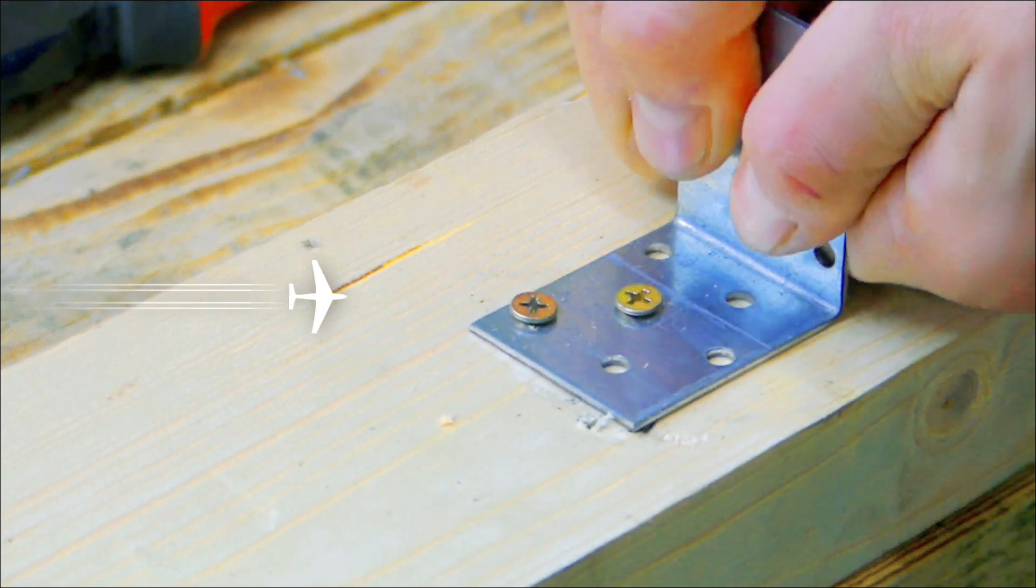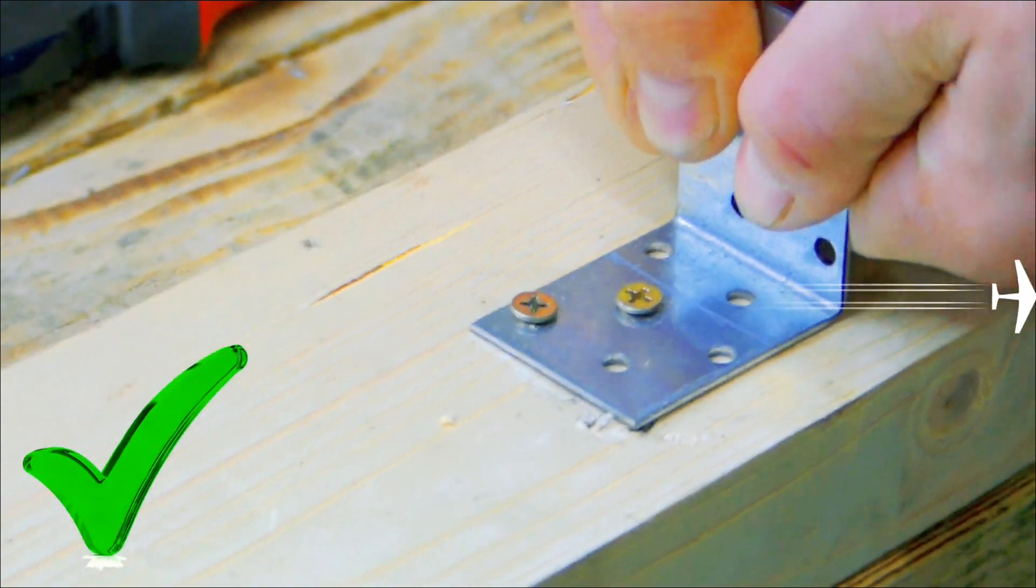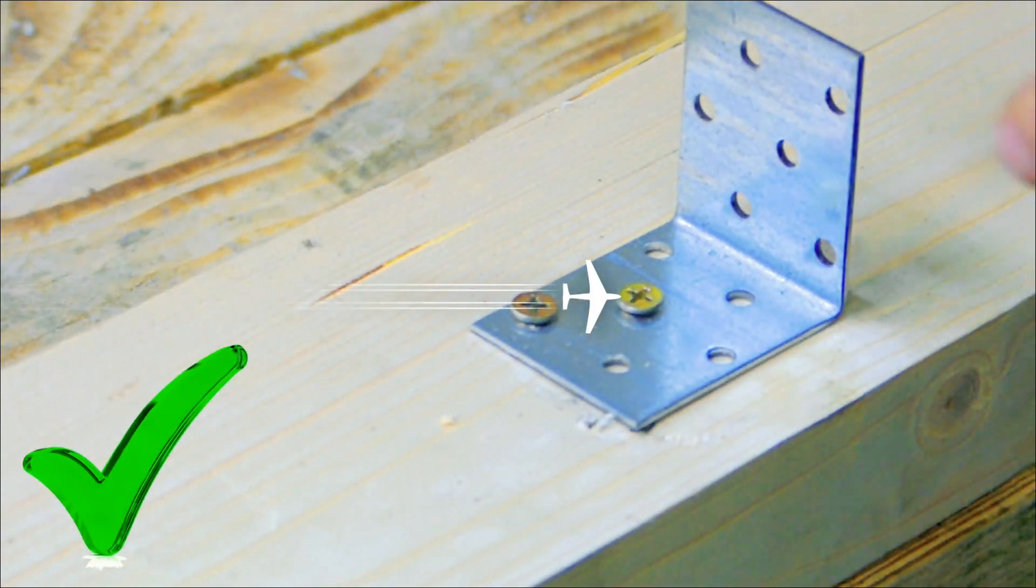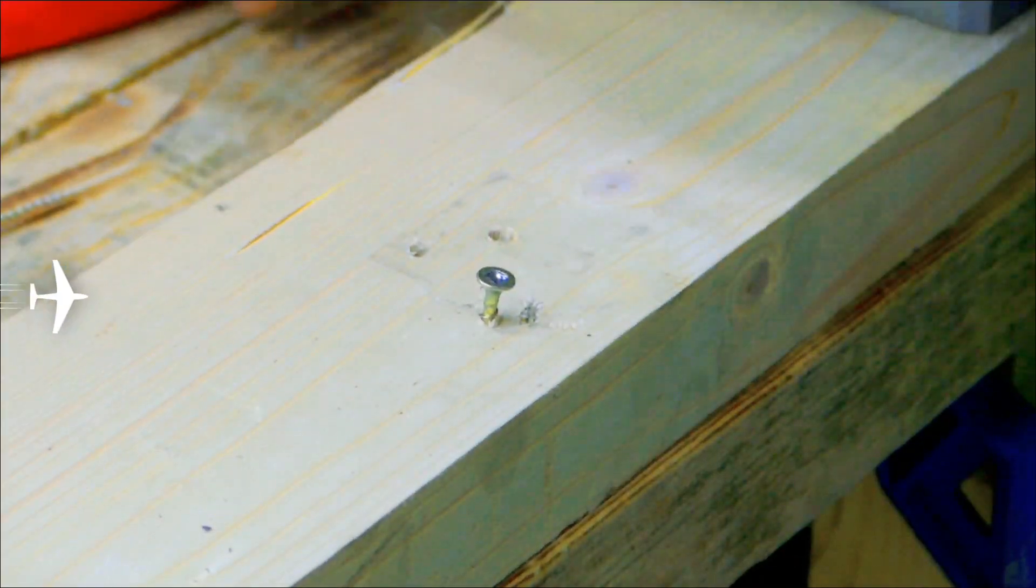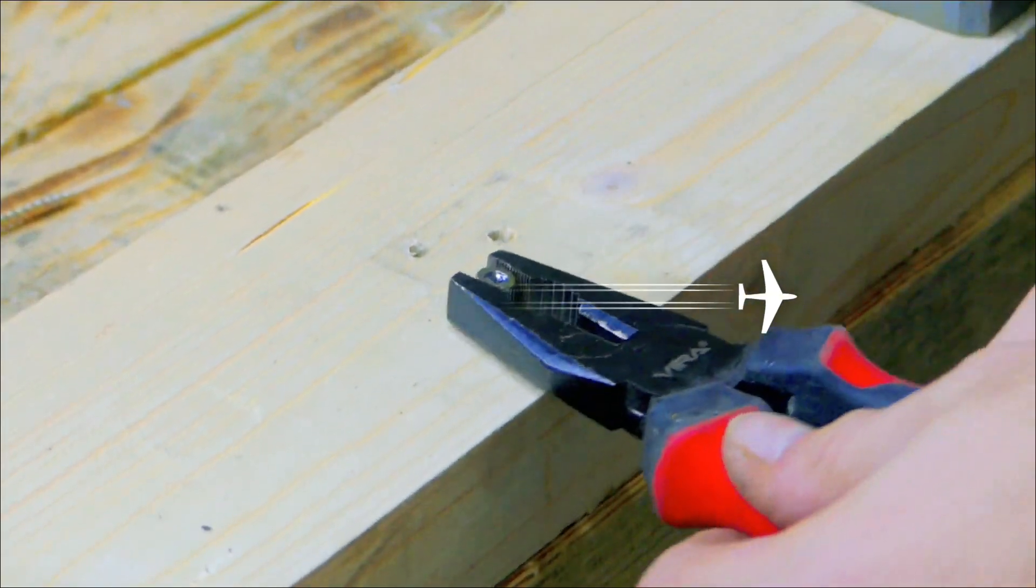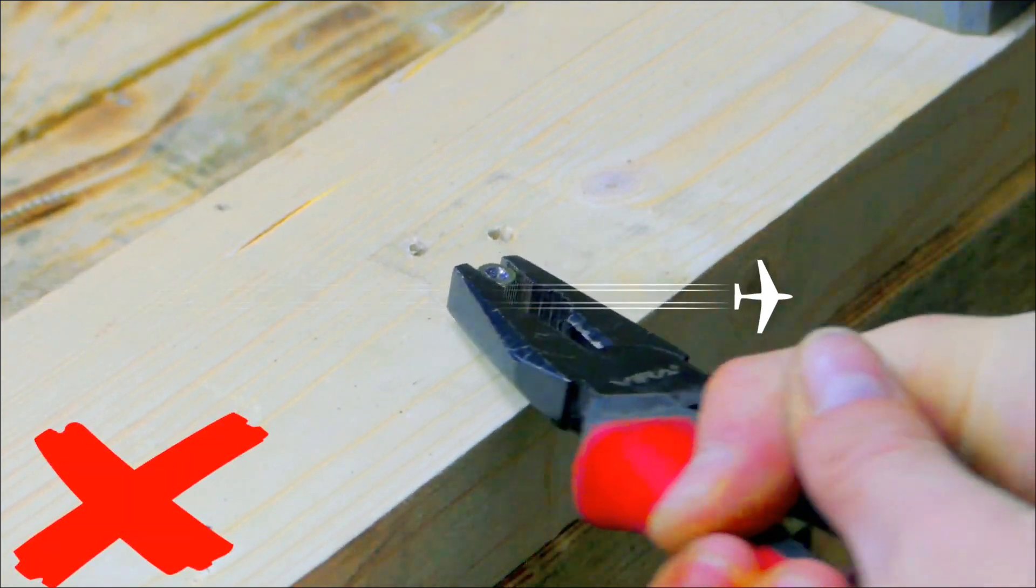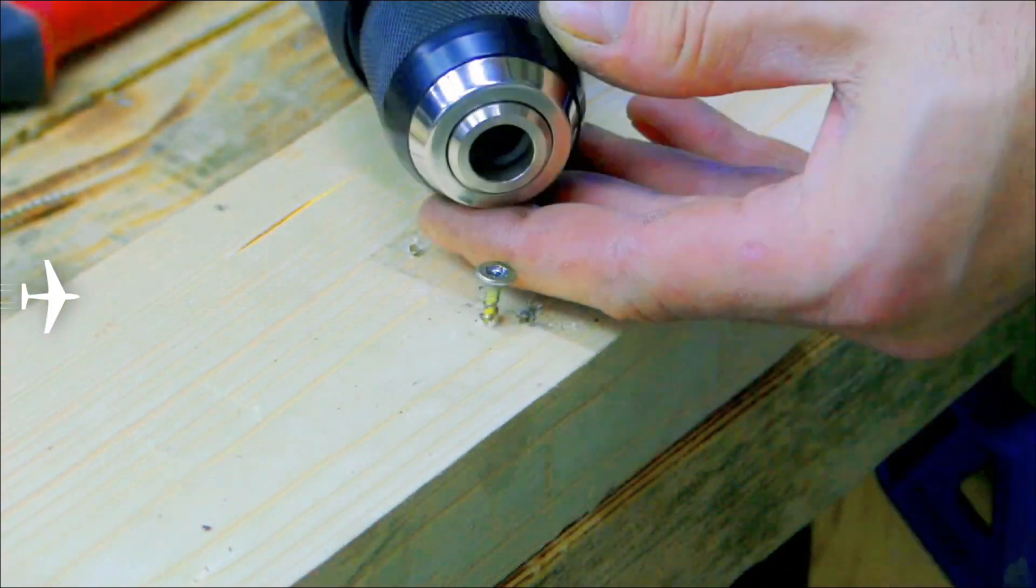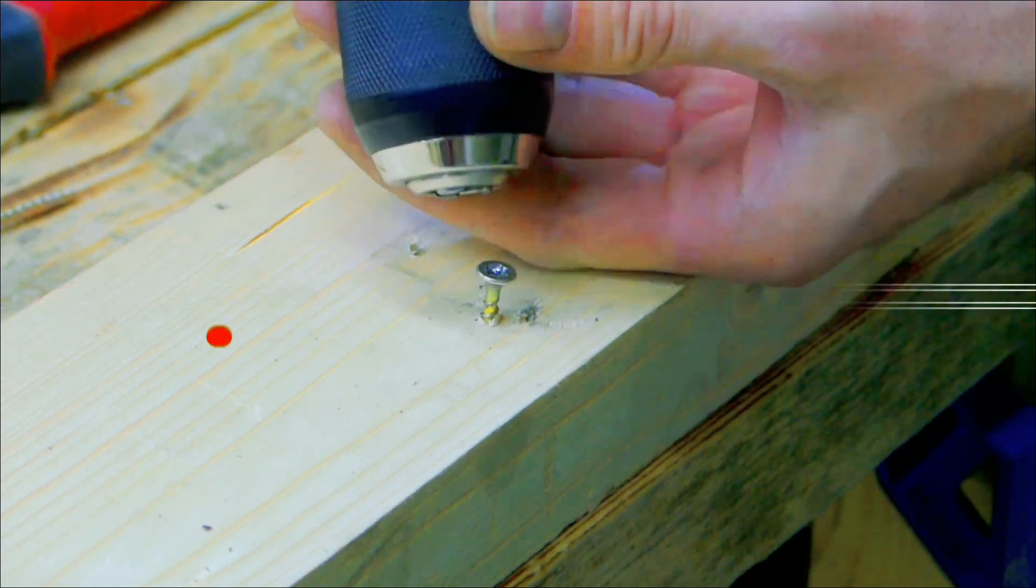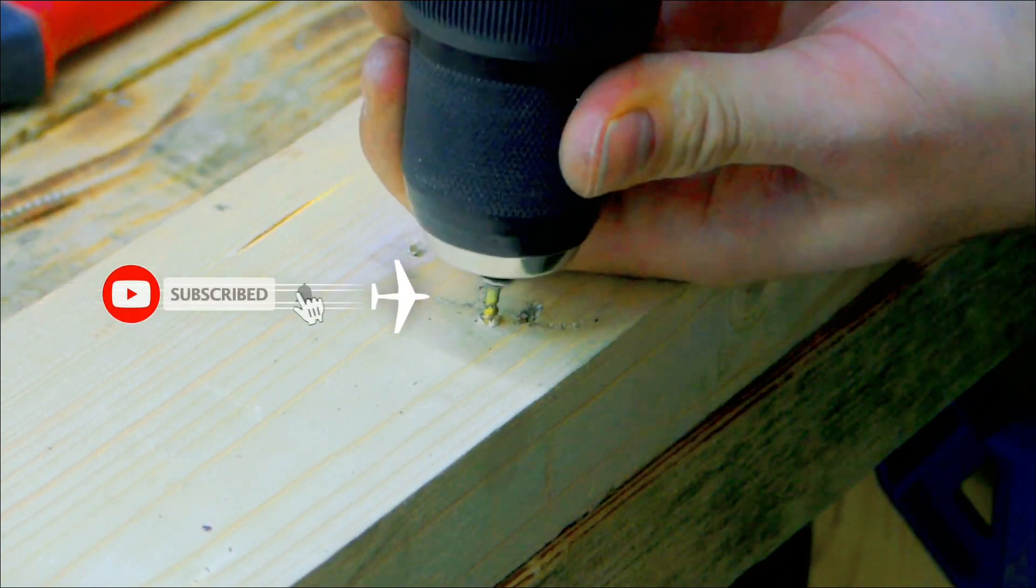Wood to be used for construction work is commonly known as lumber in North America. Elsewhere, lumber usually refers to felled trees, and the word for sawn planks ready for use is timber. In medieval Europe, oak was the wood of choice for all wood construction, including beams, walls, doors, and floors. Today a wider variety of woods is used.